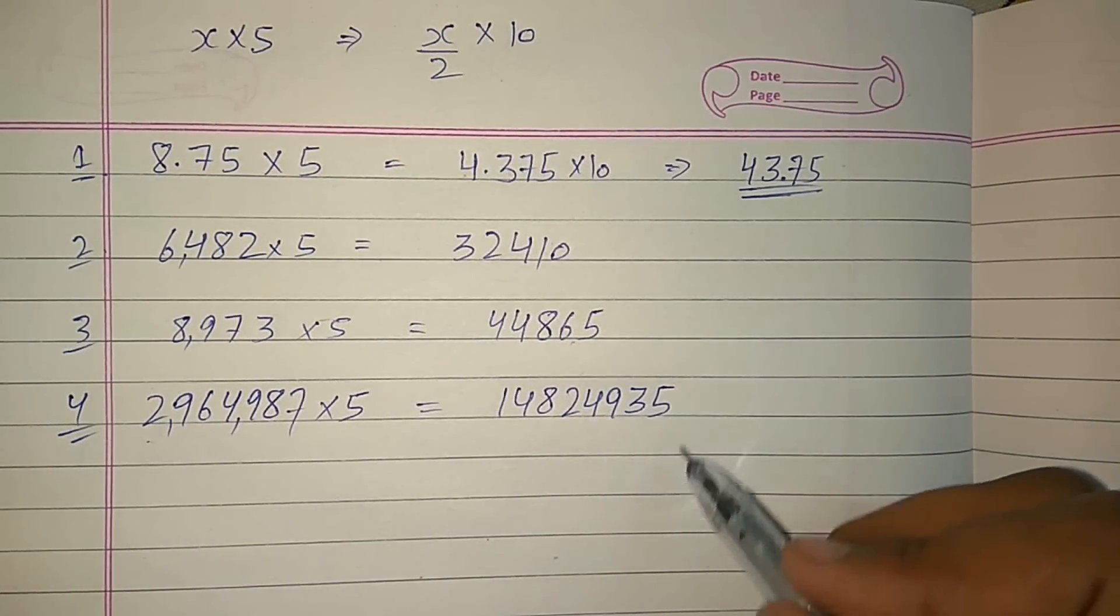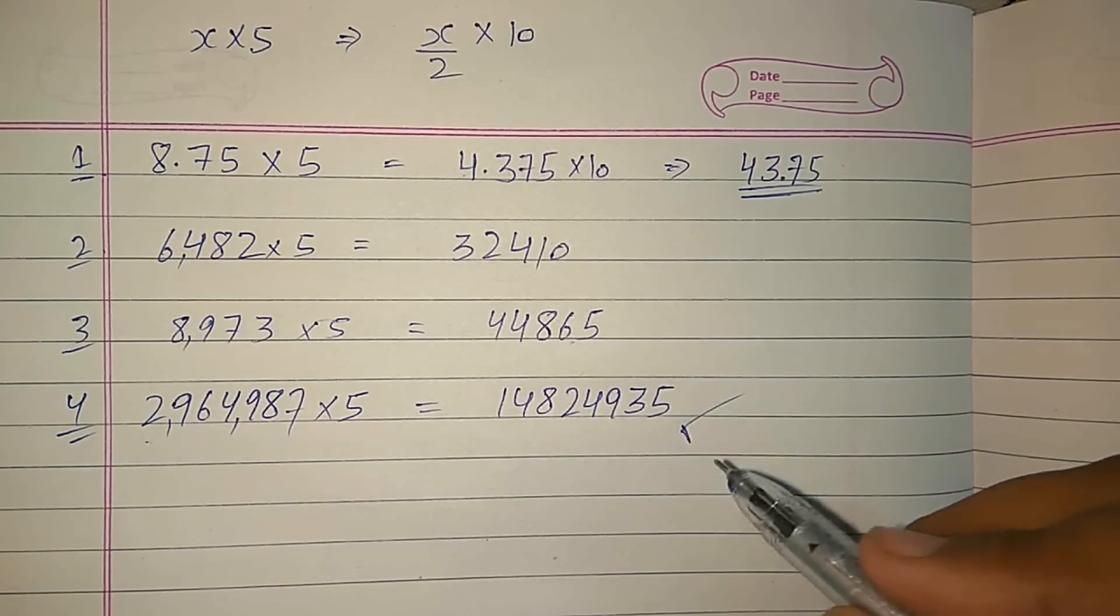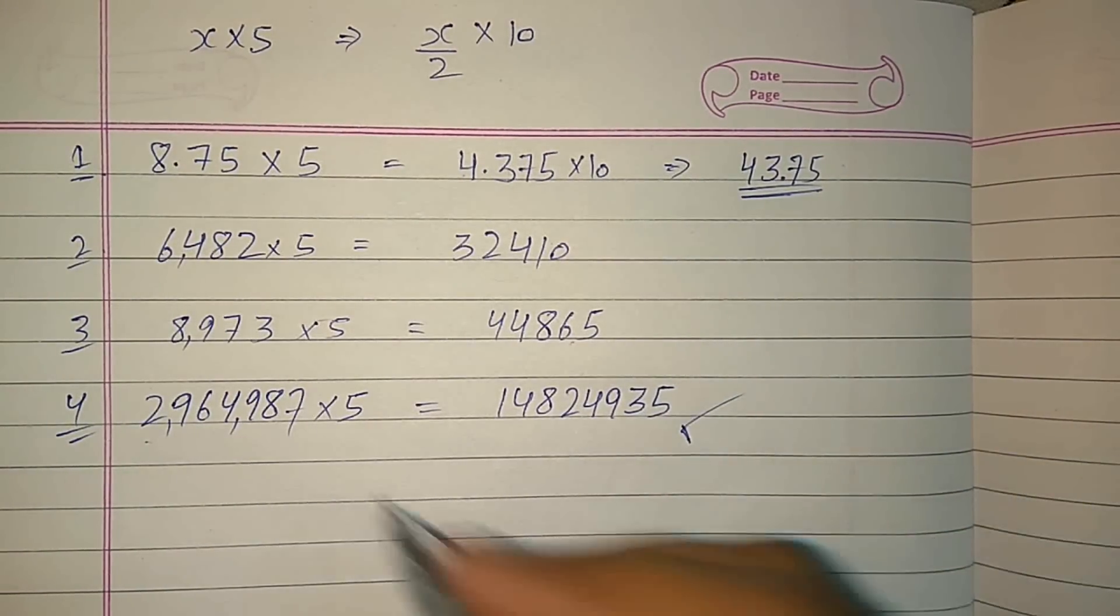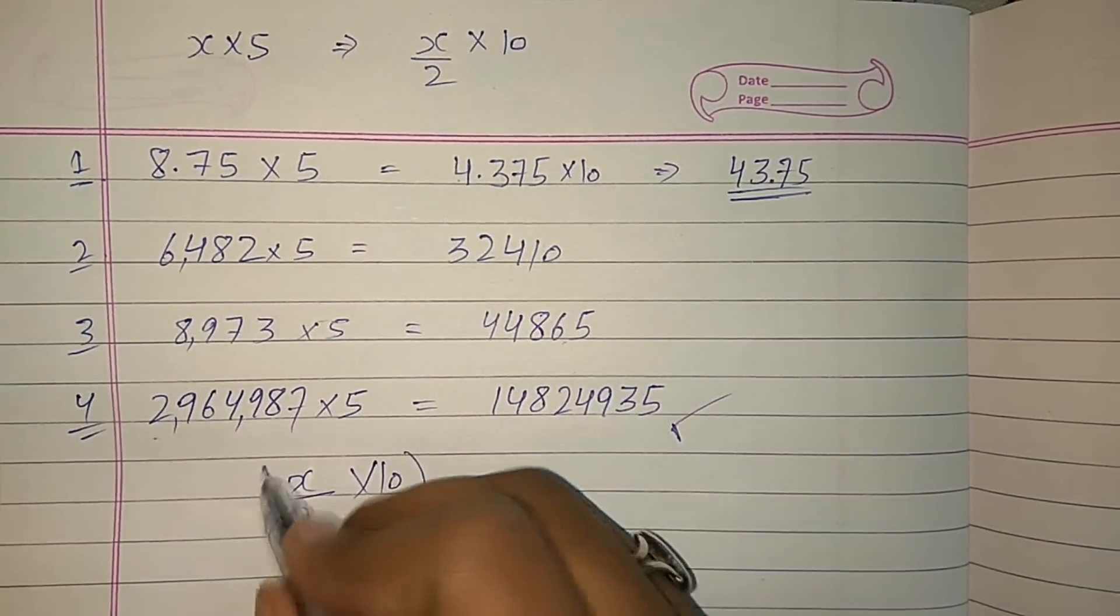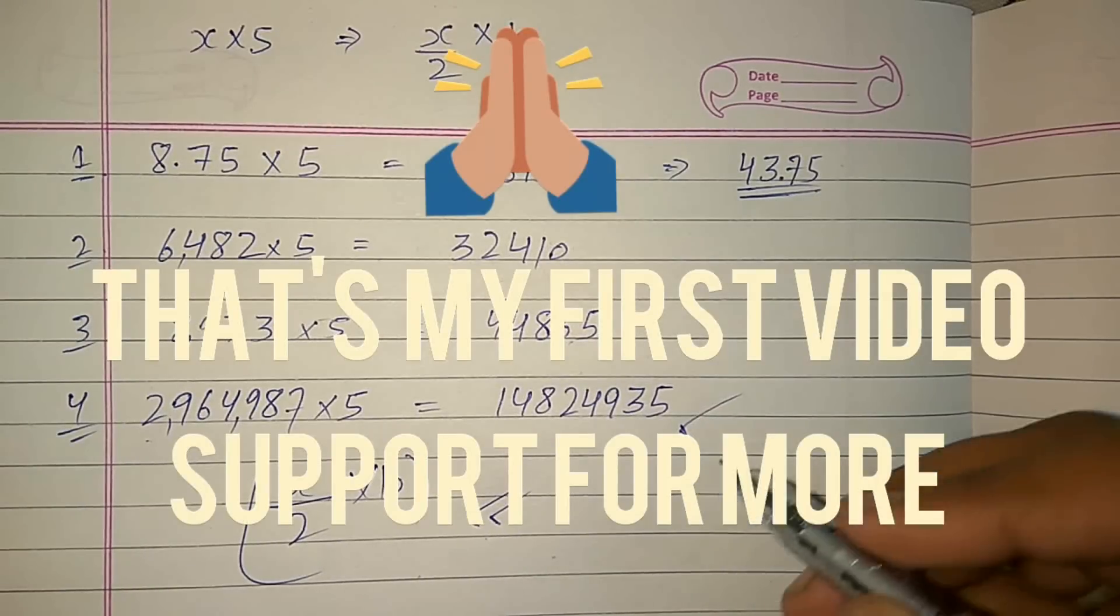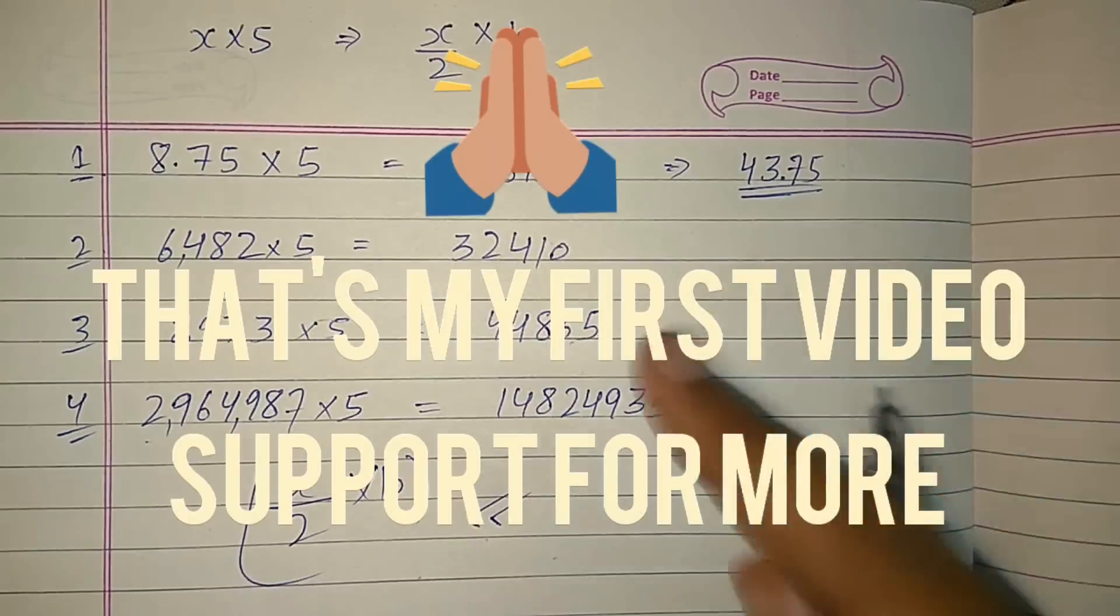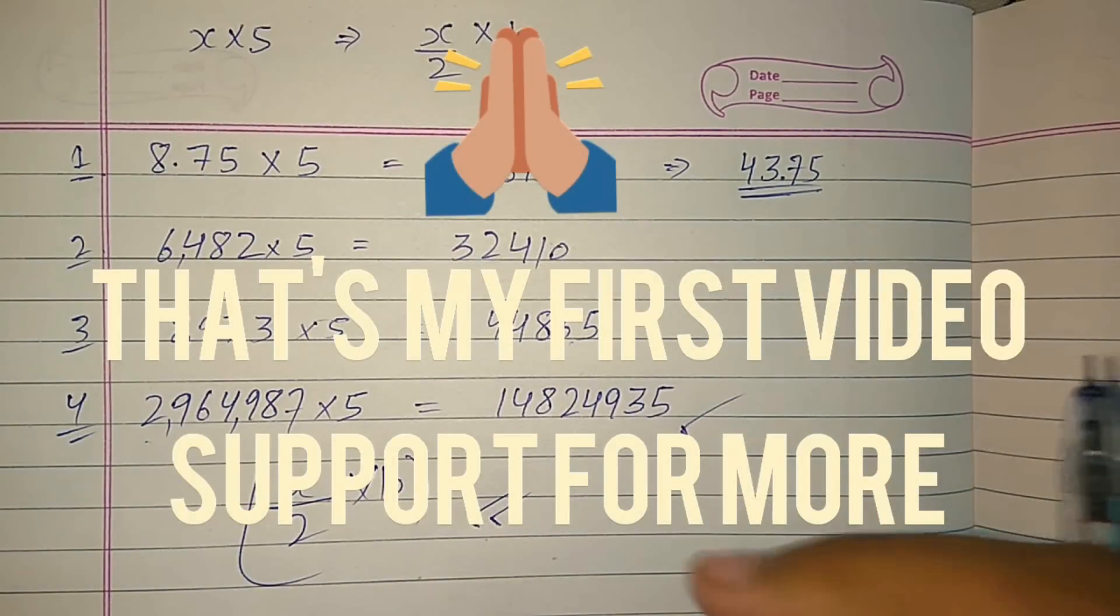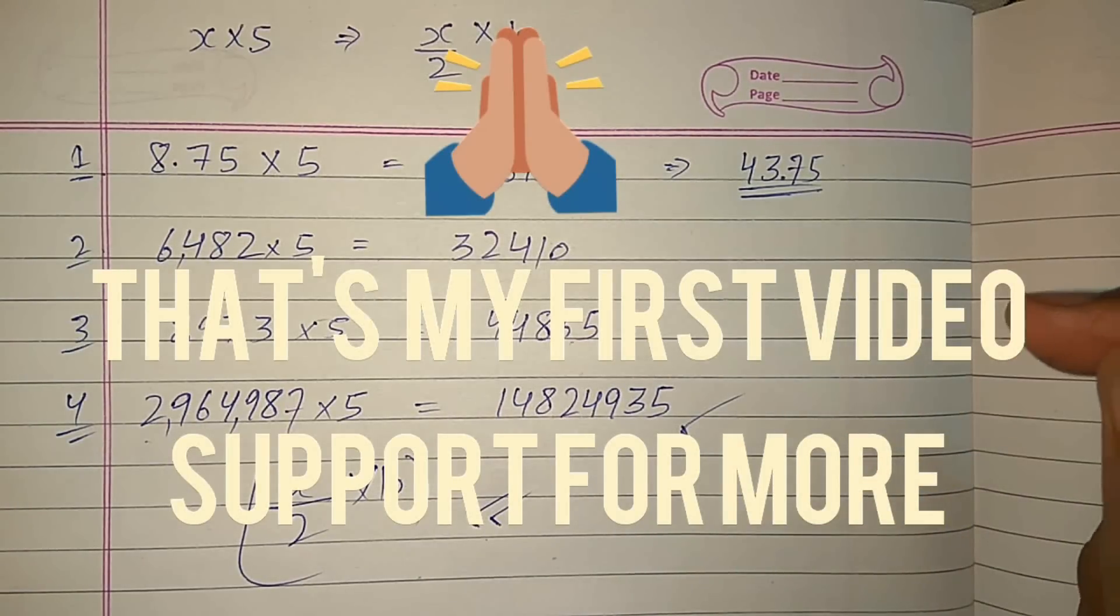See, did you see how simple it is? Simply divide the number by 2, then multiply it by 10. This is the technique. If you practice this 10 to 15 times, I am sure you'll be able to crack this in less than 3 seconds. Thanks for watching. Hope you like it. Stay connected, subscribe to our channel.